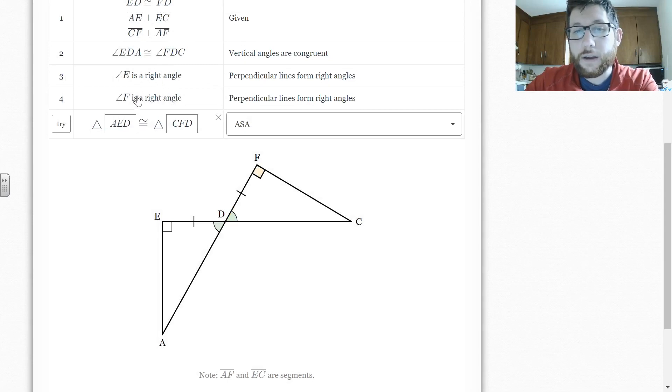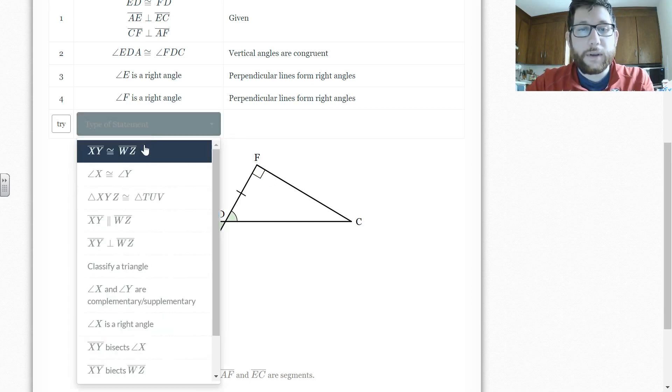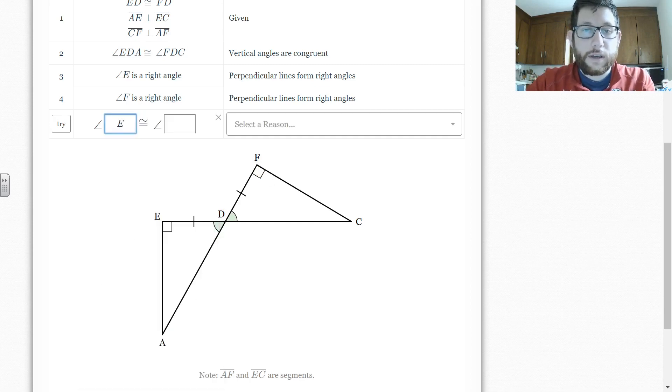Even though I said E is a right angle and F is a right angle, I actually need to say that they're now equal to each other. So say I want to go back a step. What I'm going to do is I'm going to click this X up here. That's going to let me go back a step.